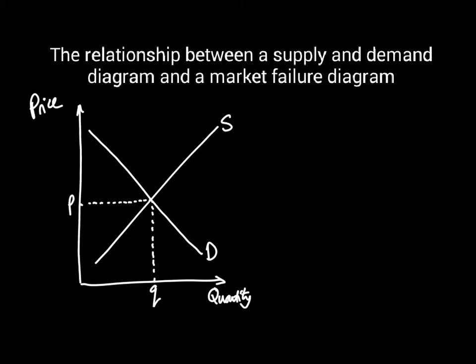The equilibrium price is the price where the market clears. At this price, the amount supplied is Q, and the amount demanded is also Q. So the market clears.